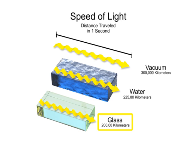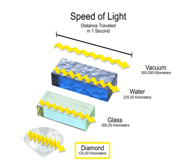Light travels very slowly through a diamond at about 41% of the speed of light, or 125,000 km per second, which is less than half the speed of light in a vacuum.